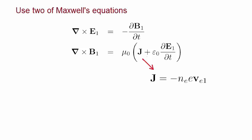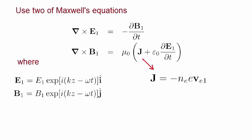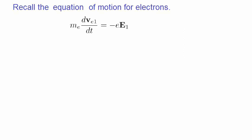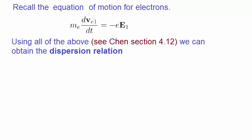We'll assume that we have a purely sinusoidal wave, so the amplitudes of the electric and magnetic fields are controlled by these two functions. Notice that these two waves move along the z-axis so that k is parallel to z. We also need to recall the equation of motion for electrons. Now we need to use all of the above equations to come up with the dispersion relation. The details of how all these equations are manipulated is given in Chen section 4.12.